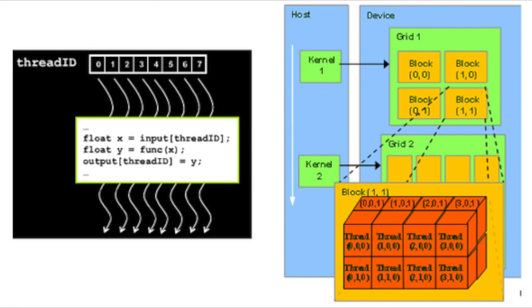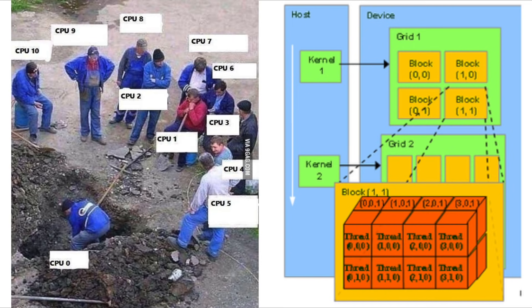A grid is a set of thread blocks that can be processed on the device in parallel. Each thread block is a set of concurrent threads that can cooperate amongst themselves and access a shared memory space private to the block. It's the programmer's job to specify the grid and block organization on each kernel call, since it can be different each time within the limits set by their specific GPU.